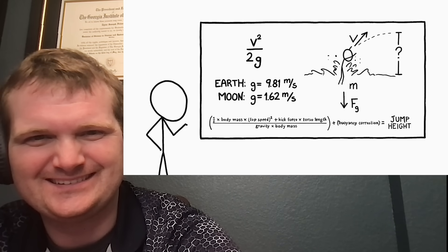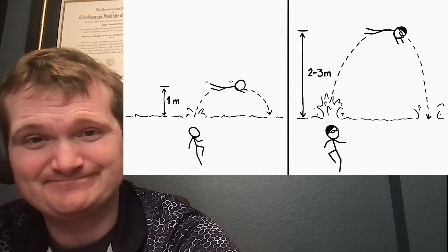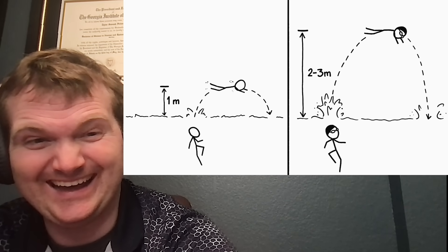Calculating the height a swimmer can jump out of the water requires taking several different things into account, but the bottom line is that a normal swimmer on the moon could probably launch themselves a full meter out of the water. An Olympic swimmer like Michael Phelps might manage 2 or 3 meters.